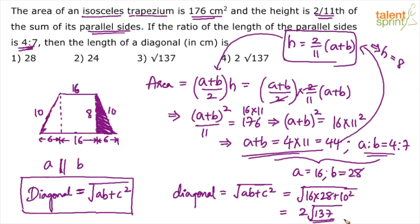I don't have enough space to write down all the intermediate steps there, but the answer comes out to be 2 root 137. So option 4 is the correct answer. What all of you have got? Option 4.